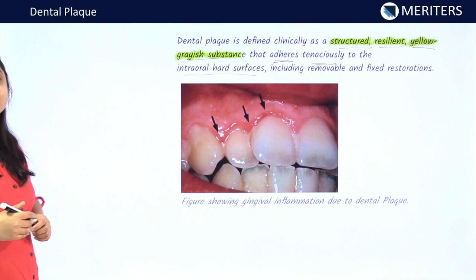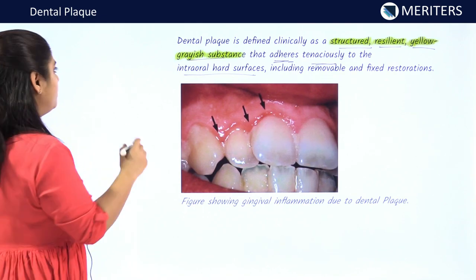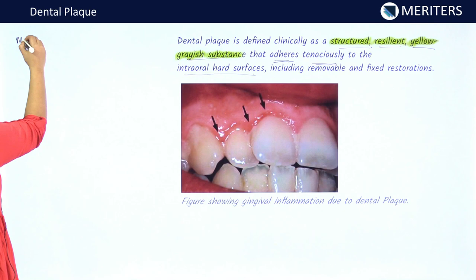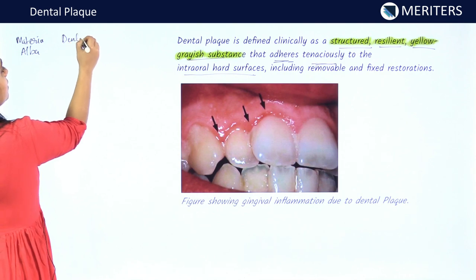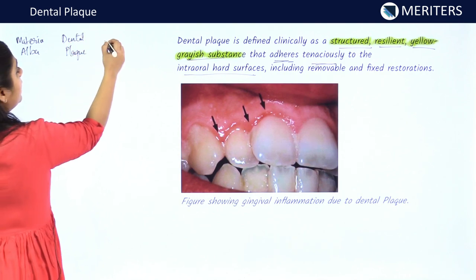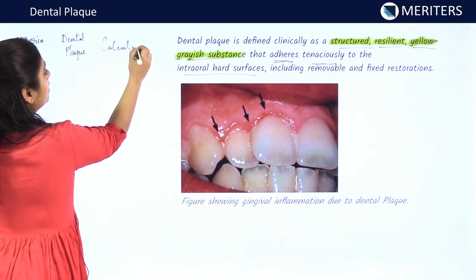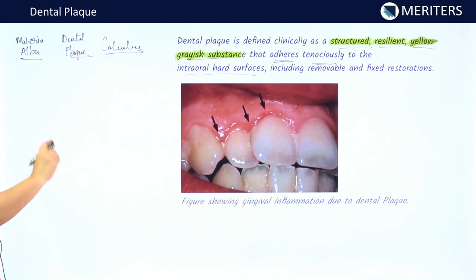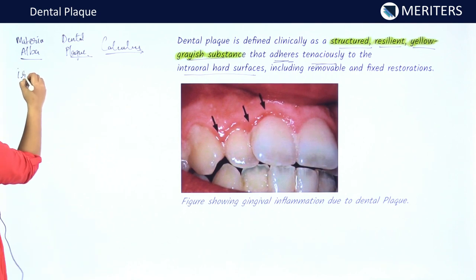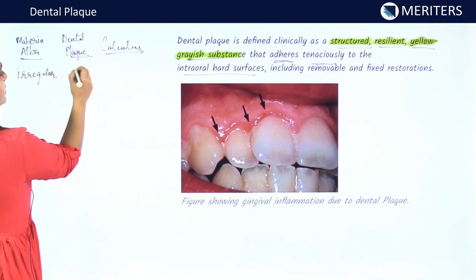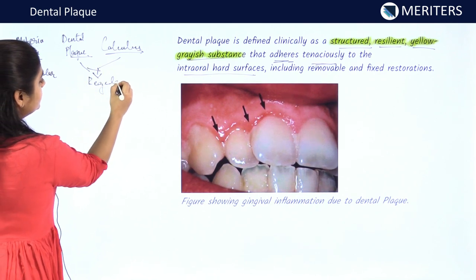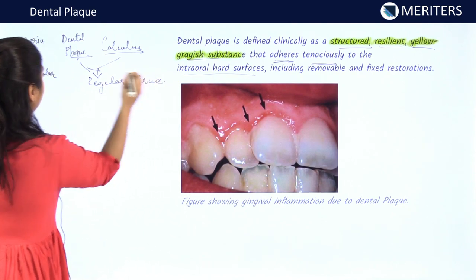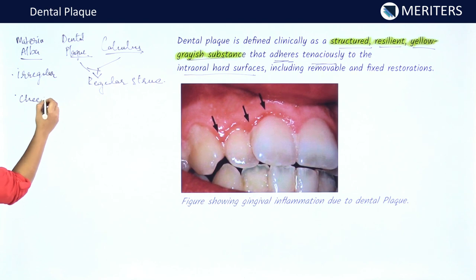Before going into the detail of dental plaque, let us first know a bit about the difference between materia alba, dental plaque, and dental calculus. Materia alba is an irregular structure, while dental plaque and dental calculus are regular structures. Materia alba has a cheese-like, whitish appearance.